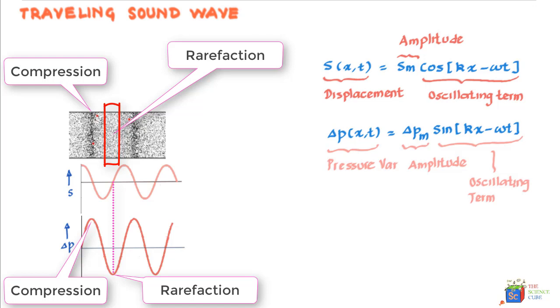So you would also see that these maximas and minimas or simply put amplitudes of pressure happen when the displacement is zero. And these amplitudes are usually much less than the pressure P when there is no wave.